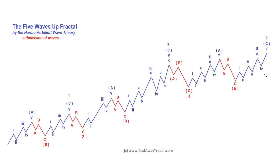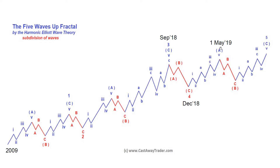Now let's align that fractal with ES-mini. We have that fractal that has been unfolding since the low of 2009. Wave three is the strongest part of the rally, topped in September 2018. Then we got a quick but deep decline, a pullback in wave four down, which bottomed in December 2018. And since then, I have been saying that we've been in a rally in wave (A) of five, meaning that as soon as it tops, we should get a corrective wave (B) down.